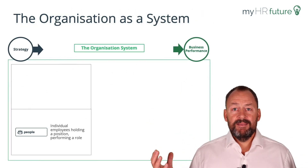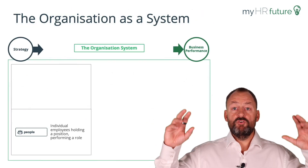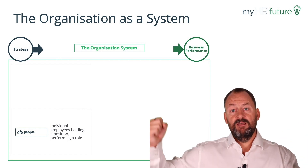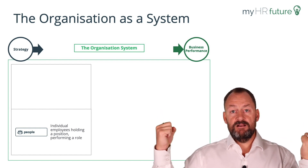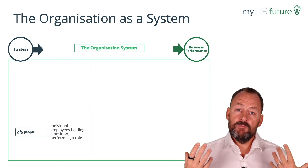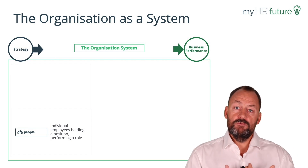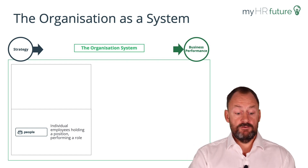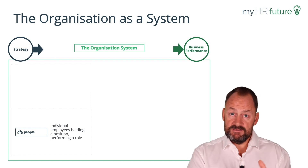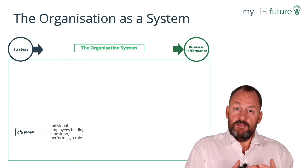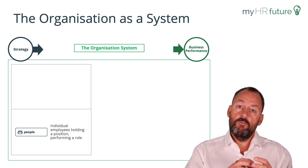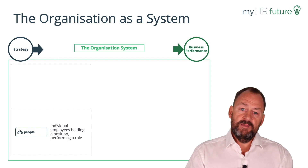Let's unpack this organization as a system. You have your strategy and you have your business outcome. What's in the middle? Well, we start with people — who are the people you employ. This could be contractors as well or suppliers, but it's human beings who are going to do work.